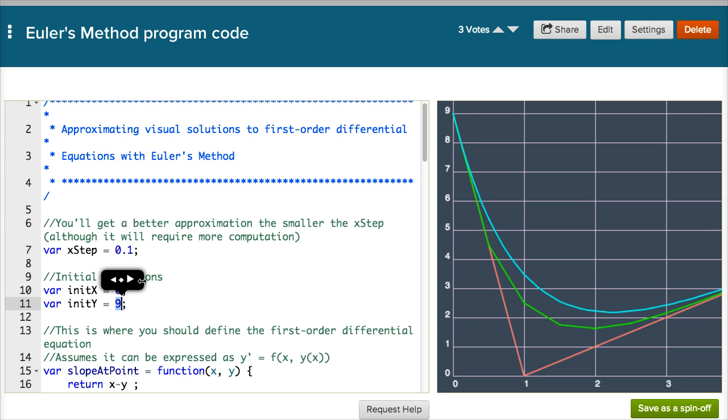So anyway, hopefully you found that interesting. And I encourage you to modify this and understand this because the whole point of Euler's method is it's a numerical method. It's to use something like a computer in order to approximate solutions.